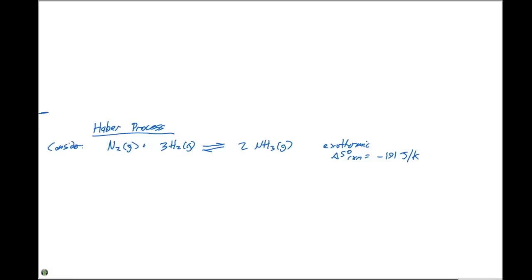The question is: can we predict the spontaneity of this reaction given this information? We know that ΔG° = ΔH° - TΔS°. The delta H here is negative because we're told this is an exothermic reaction. So in an exothermic reaction we have a negative ΔH. If our reaction has a negative value for ΔS, this second term becomes positive.